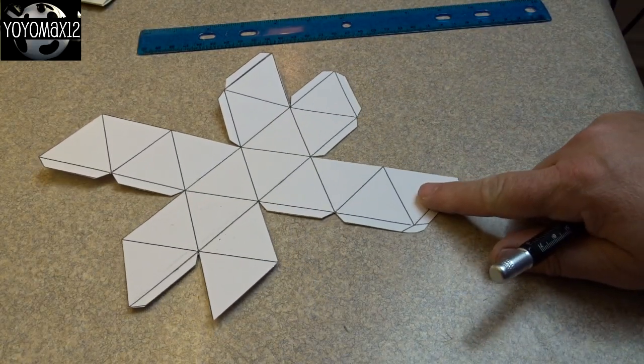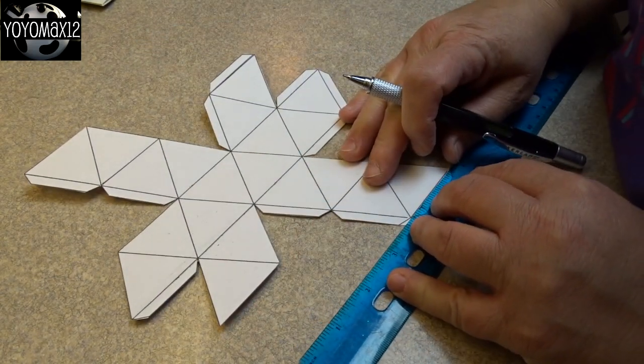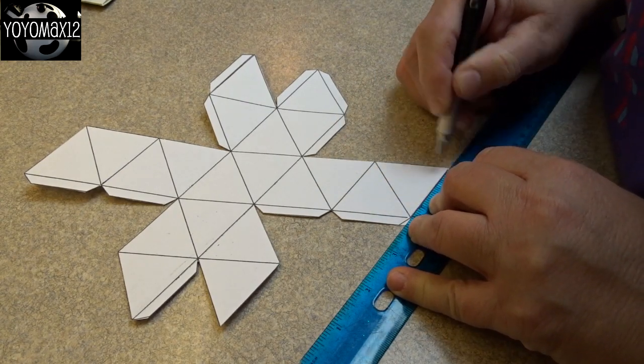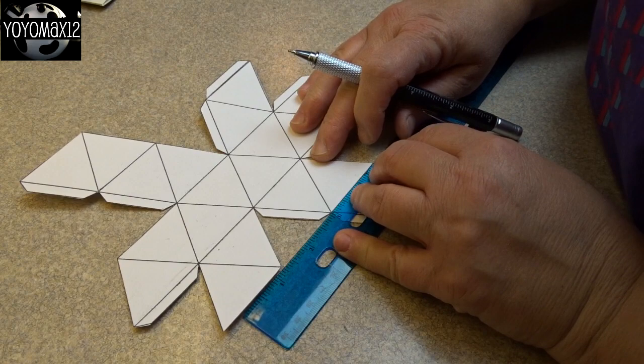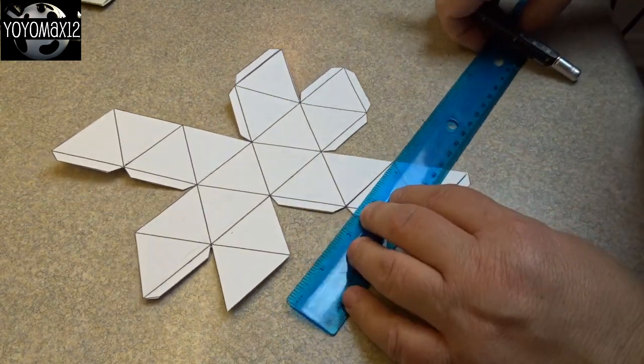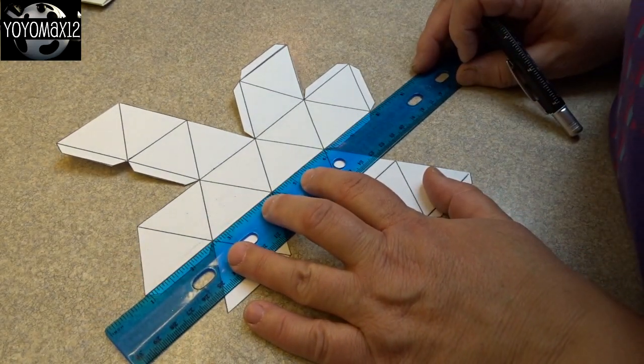The other template you'll need is this one. This is going to make the center hub that all of those star points are going to attach to. I printed it out on cardstock because I wanted it to be solid and then I scored using a ruler all those lines because all those lines are fold lines. You'll have a bunch of little flaps and then you'll have all these little triangles.